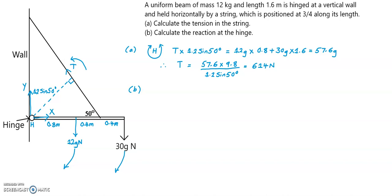So resolving horizontally, it's a double arrow because this beam is not moving horizontally. So x equals, this force must be balanced by the horizontal component of the tension in the string, so that's going to be balanced by T cos 50 degrees. So x is going to equal 614 cos 50 degrees.